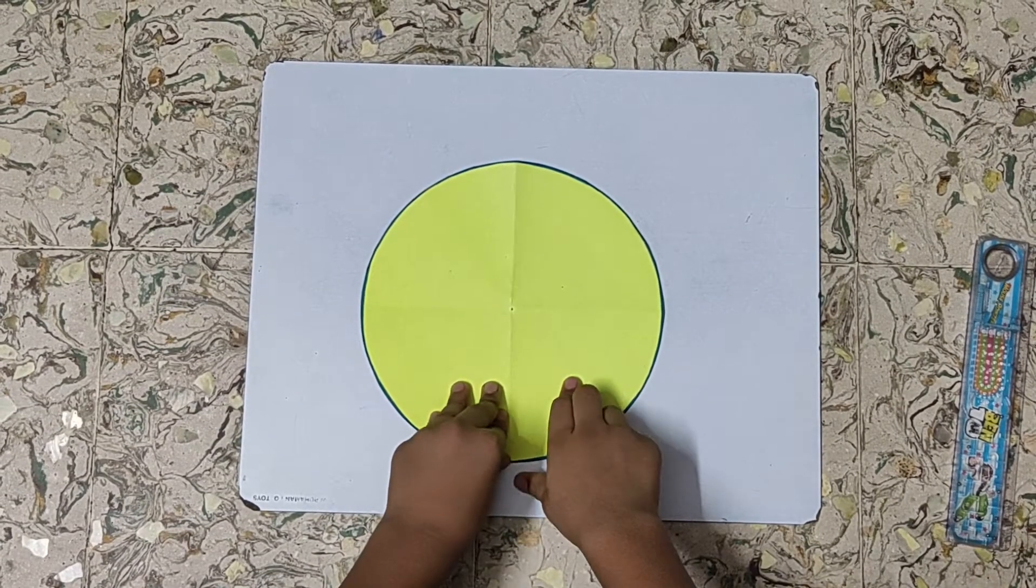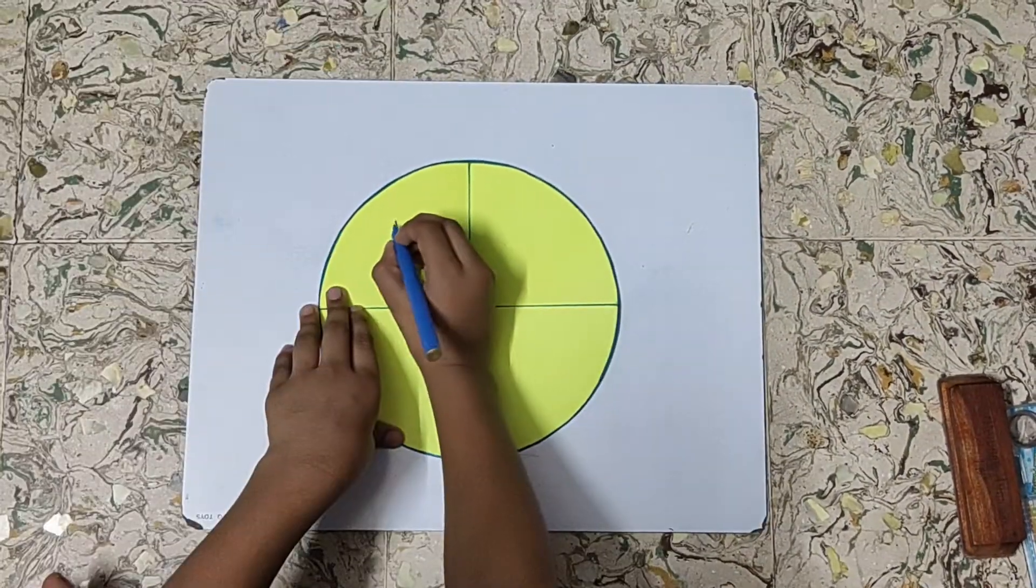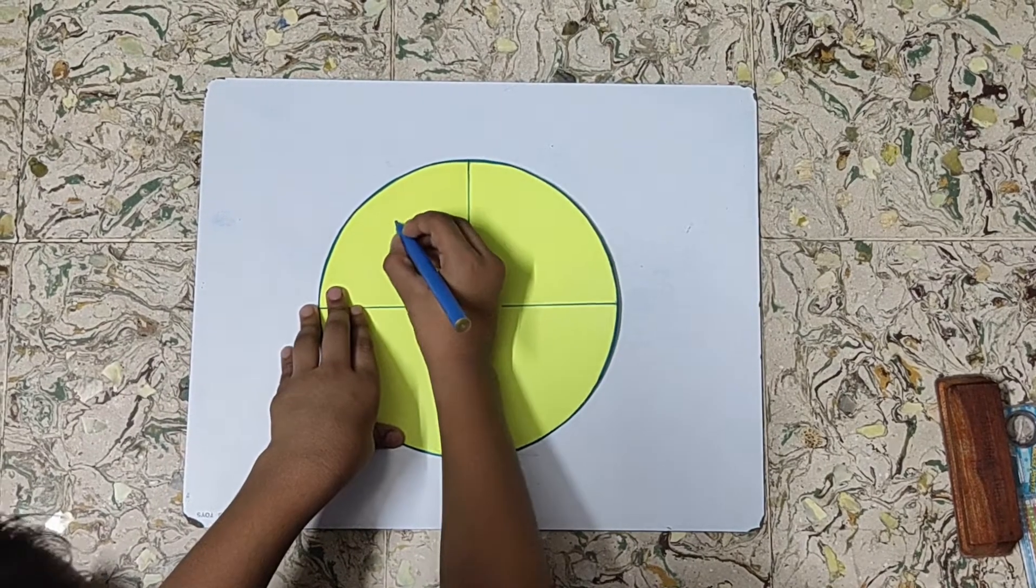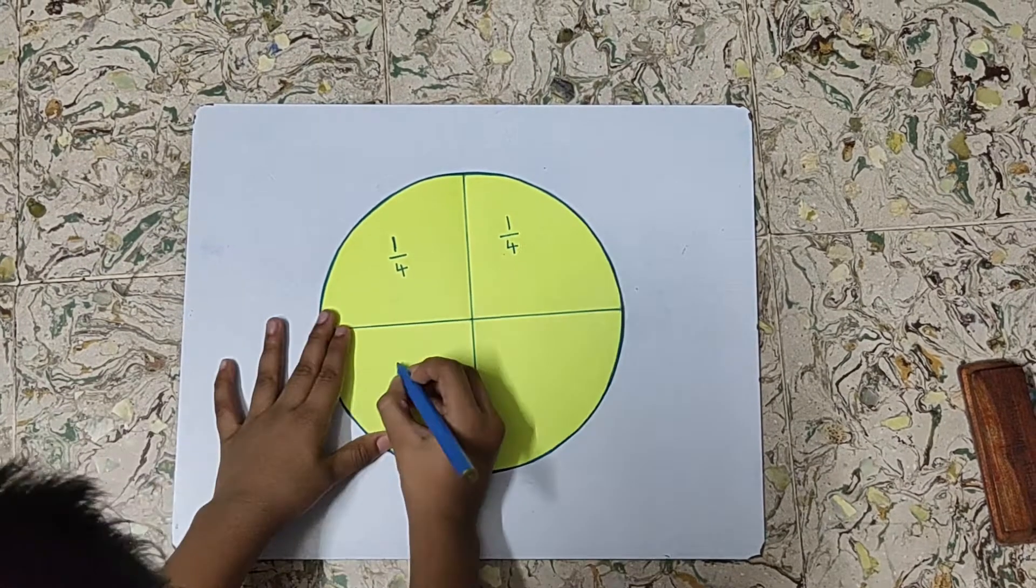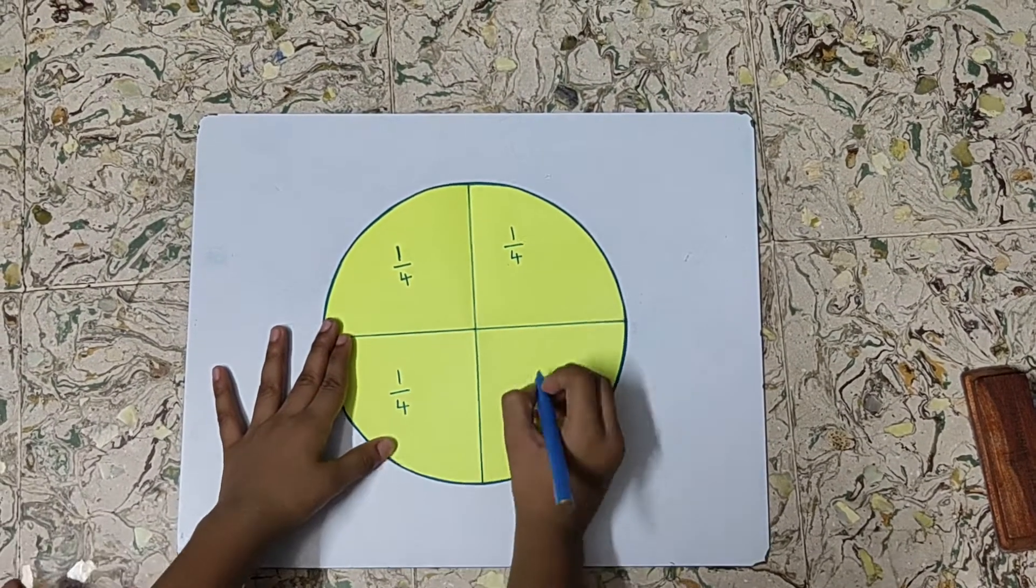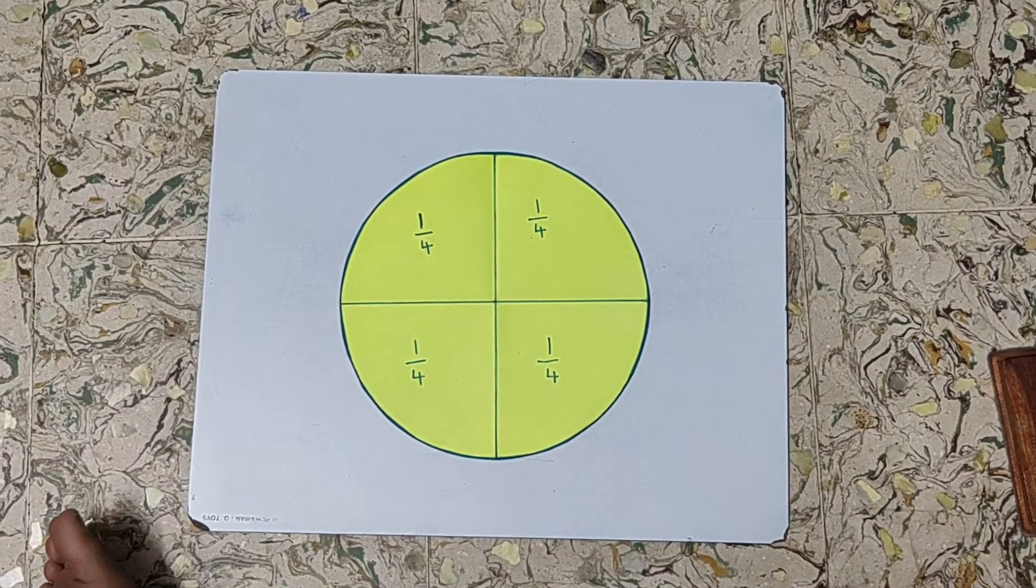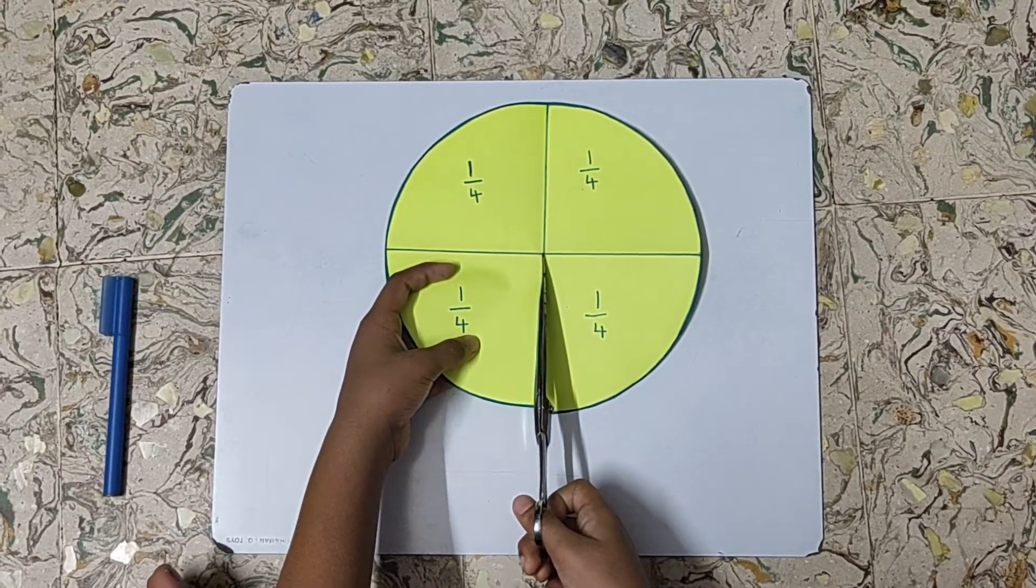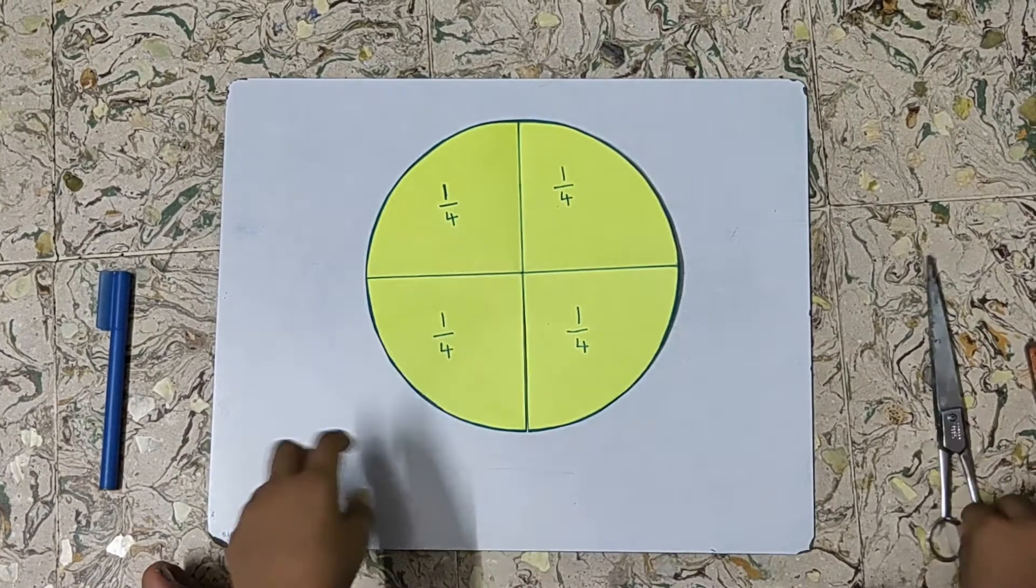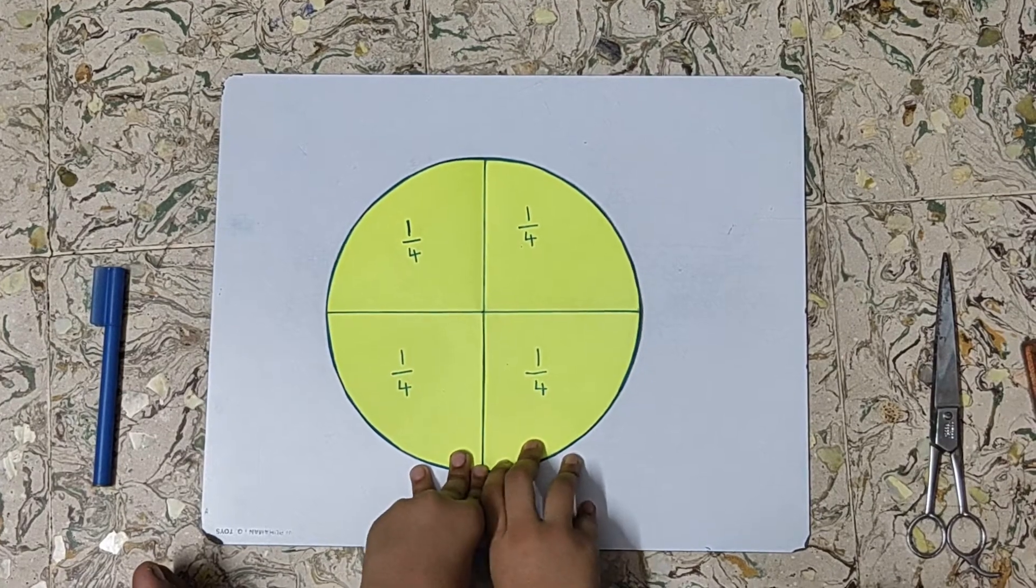Now, we will highlight the folded area. Now, we will write 1 by 4. Now, we have written. Now, we will cut. We should cut up to the center. Now, the fraction circle of 1 by 4 or 1 fourth is ready.